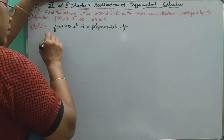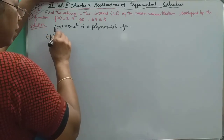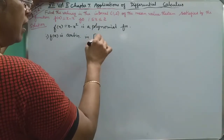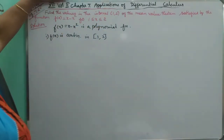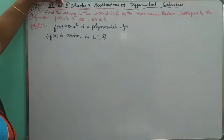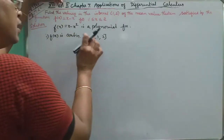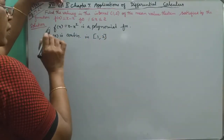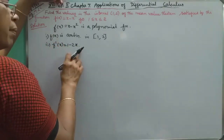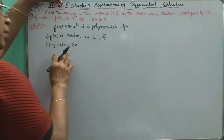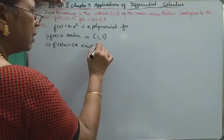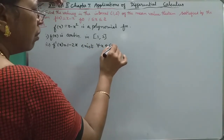Number 1: f of x is continuous. This is continuous in the interval. So, f of x is continuous on the closed interval [1,2]. And f dash of x is 1 minus 2x, which exists for all x belonging to the open interval (1,2).